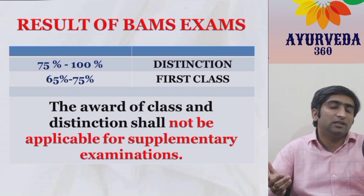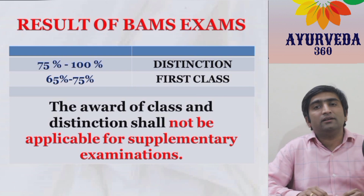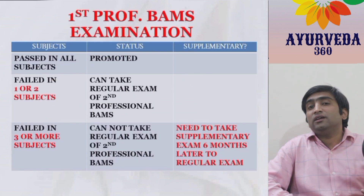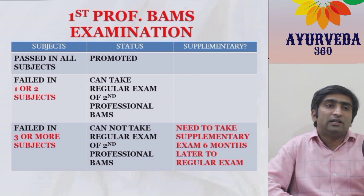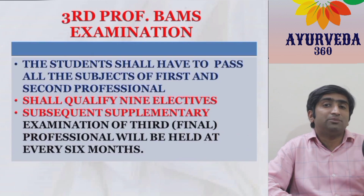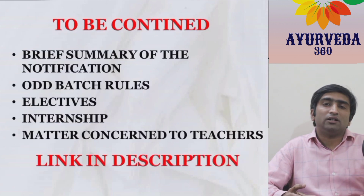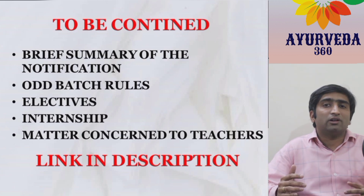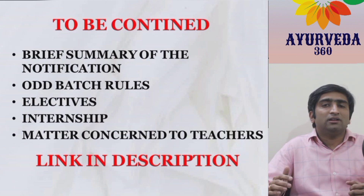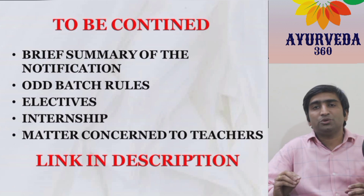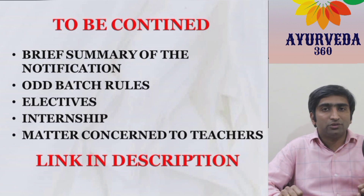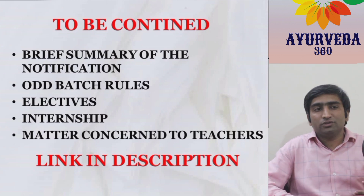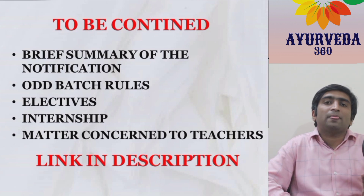Results will be declared as distinction and first class if the percentage is above 75% and 65% respectively. If a failed student scores these marks in the supplementary exam, those grades are not considered. Regarding promotion and something called 'odd batch' — a student entering odd batch faces psychological effects for a longer time, which may even impair their ability and lead to depression. It is very important for students to know how not to fall into the odd batch trap, so they can complete the course as soon as possible and get their degree.